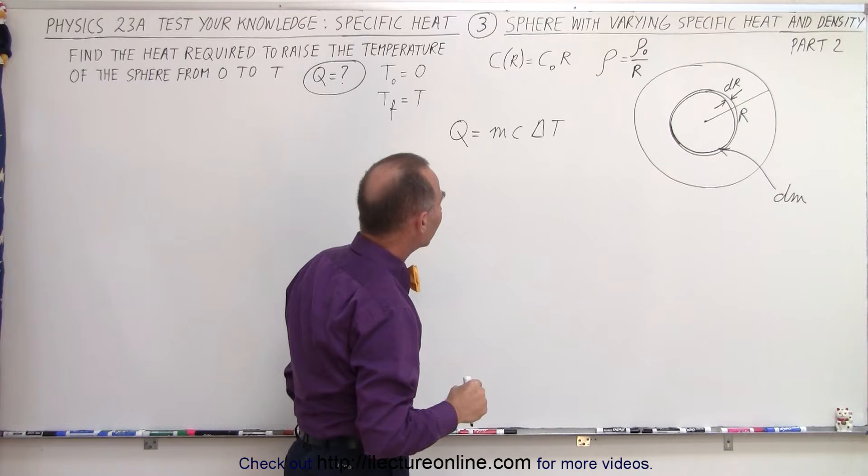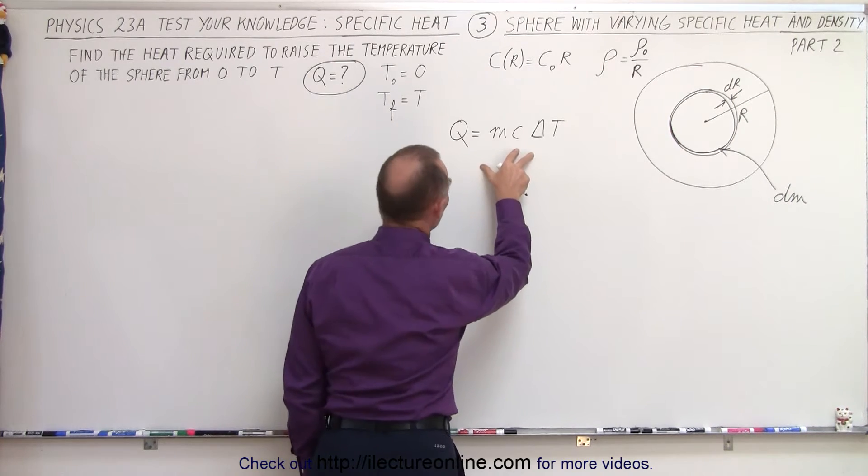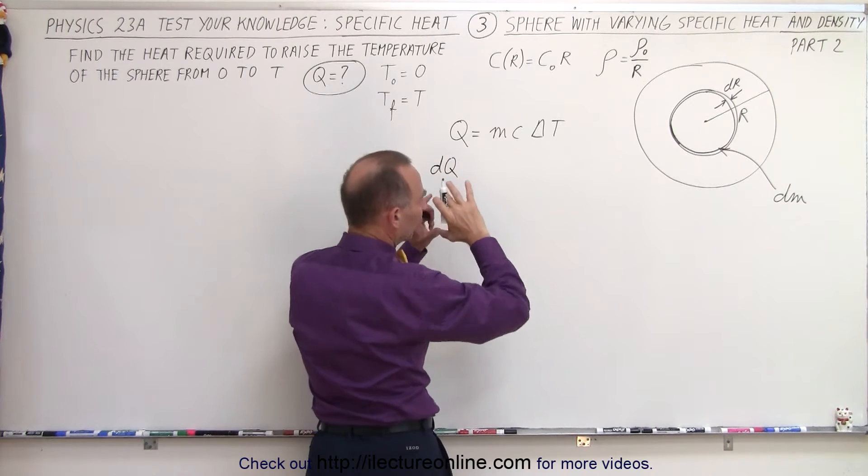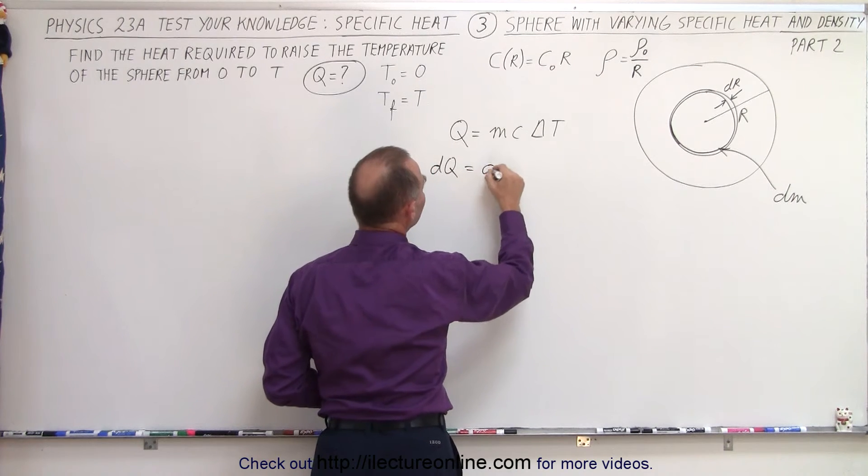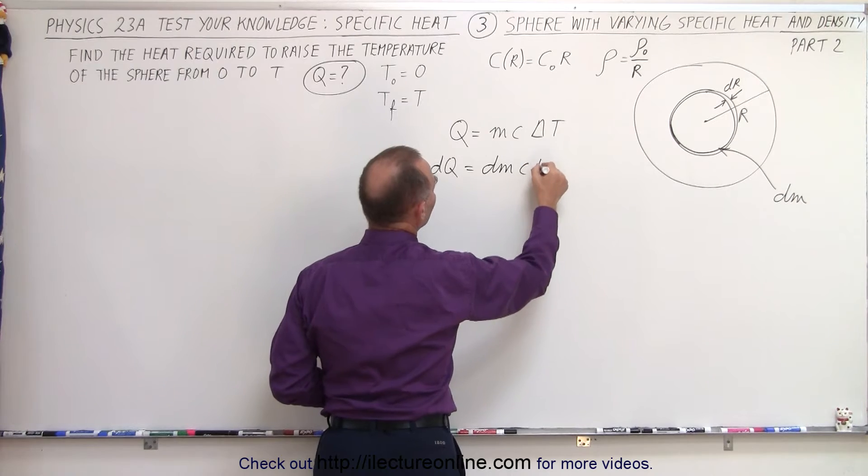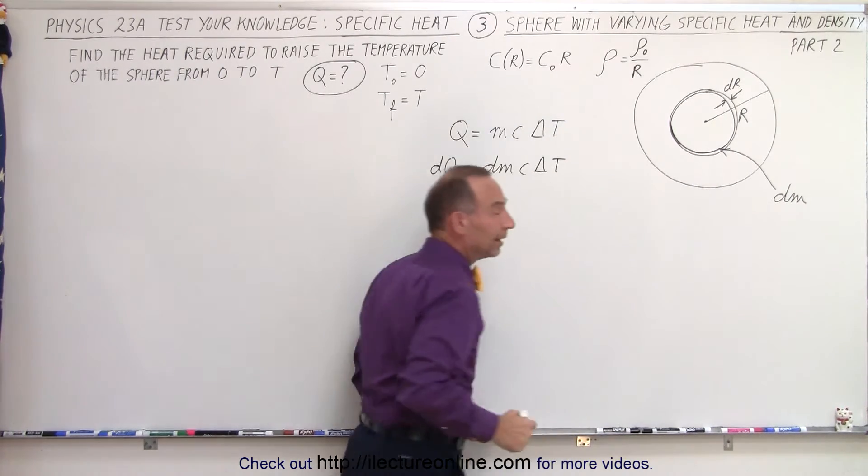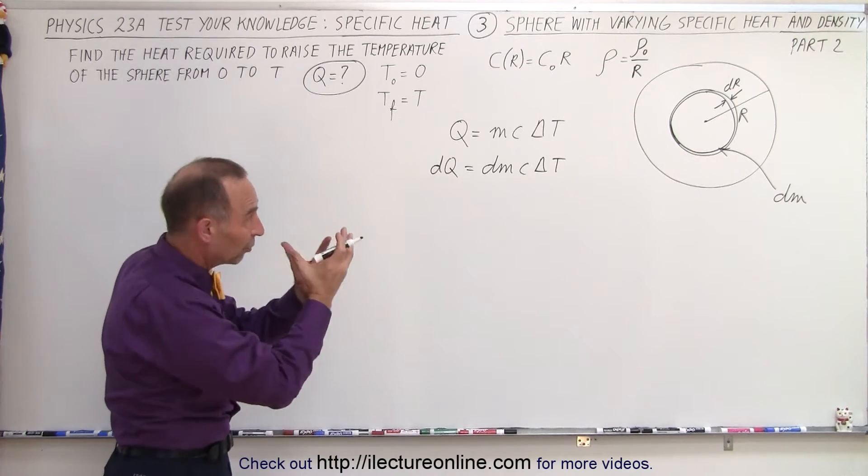Well, first of all, let's now write this in terms of a dQ. We can say that a small amount of heat required for that spherical shell is going to be equal to dm times C times delta T. So now we need to find out what our dm is equal to, the mass of that small little spherical shell.